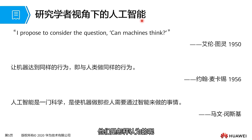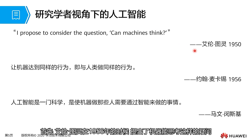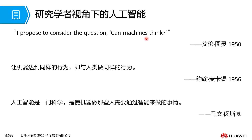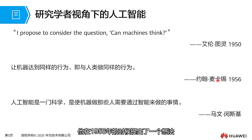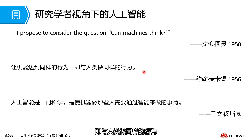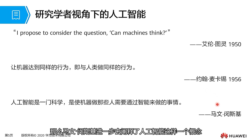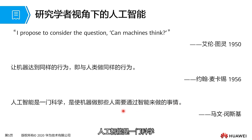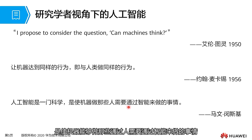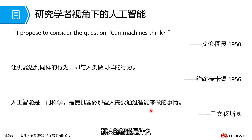Now let's look at artificial intelligence from the perspective of research scholars. In 1956, Alan Turing raised questions about machine performance. Researcher John McCarthy, in the 1950s, proposed the idea of artificial intelligence — the goal being to enable machines to achieve the same behavior as humans. Marvin Minsky further explored the concept, stating that artificial intelligence is a science that enables machines to do what humans need intelligence to do.